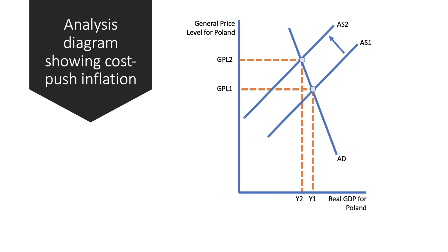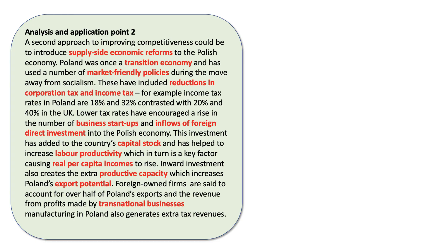A diagram would help support the point I've made, showing that depreciation of the Zloty could lead to cost-push inflation. The diagram is contextualized — it shows the general price level for Poland and the real GDP for Poland, with an inward shift of aggregate supply.